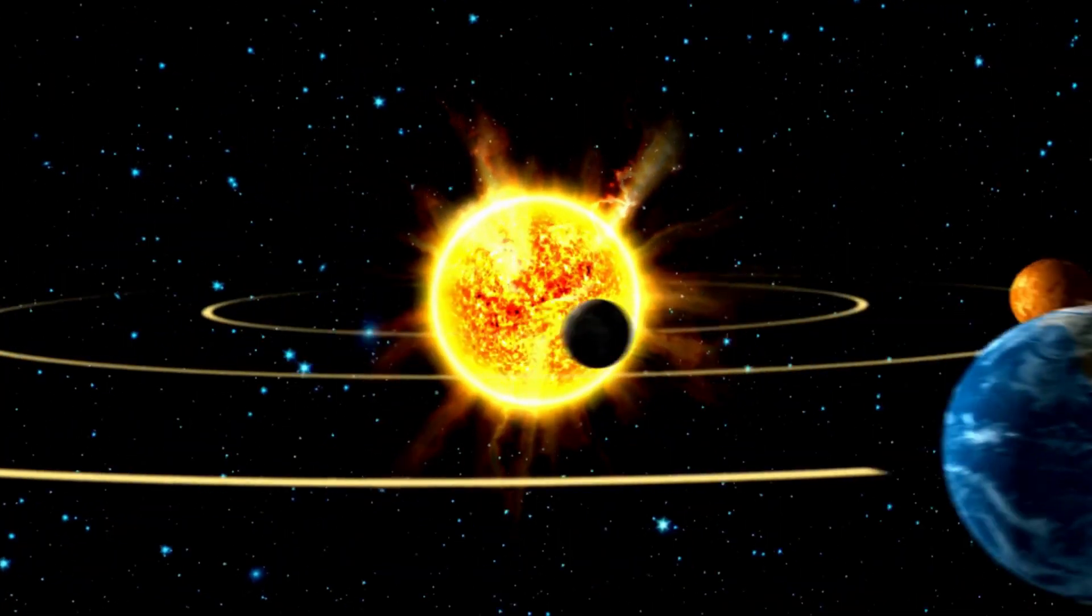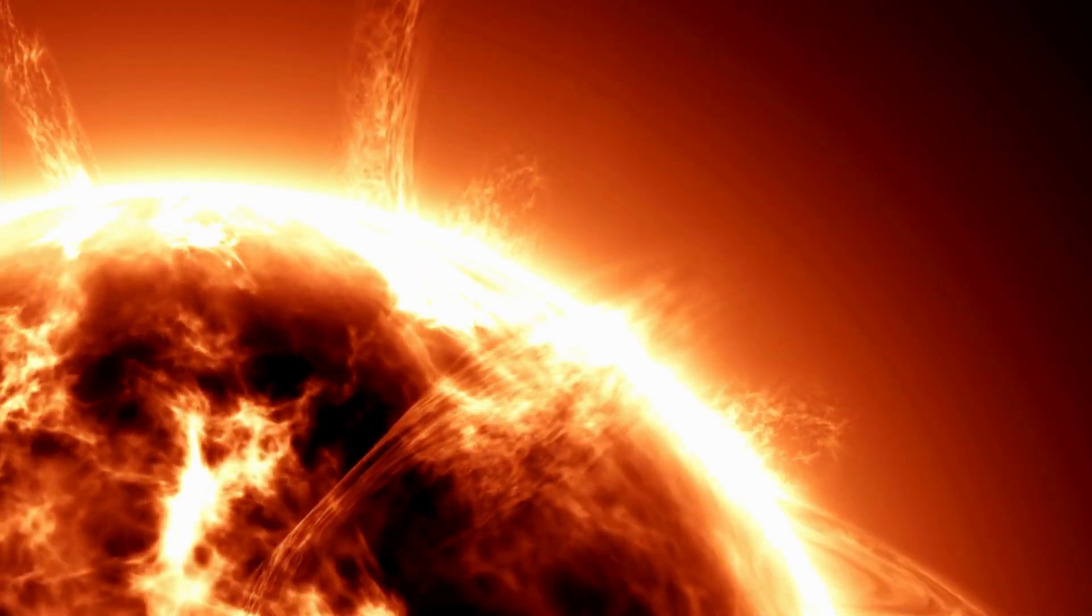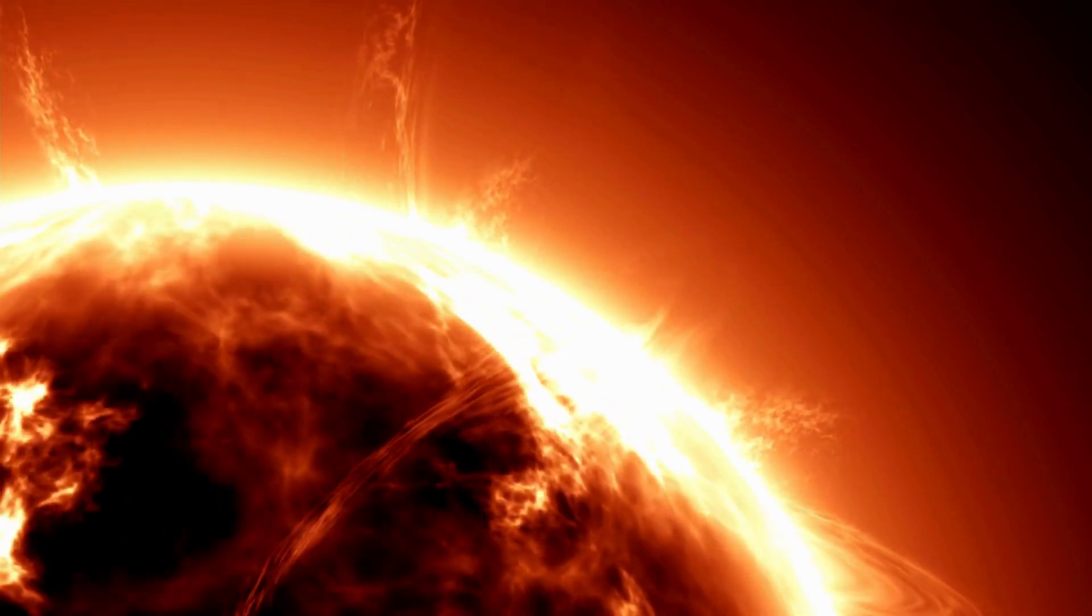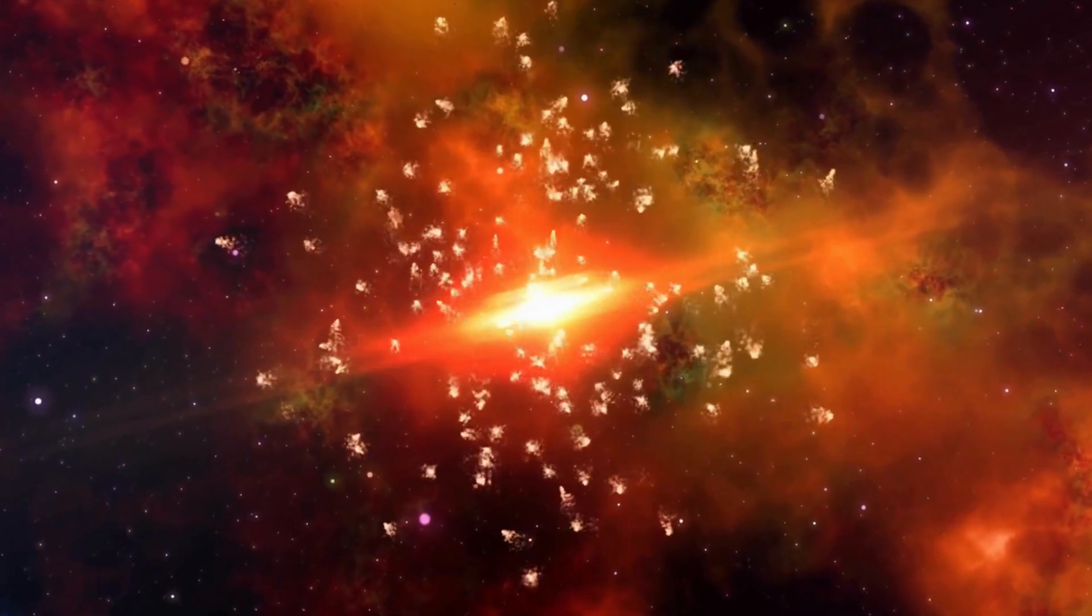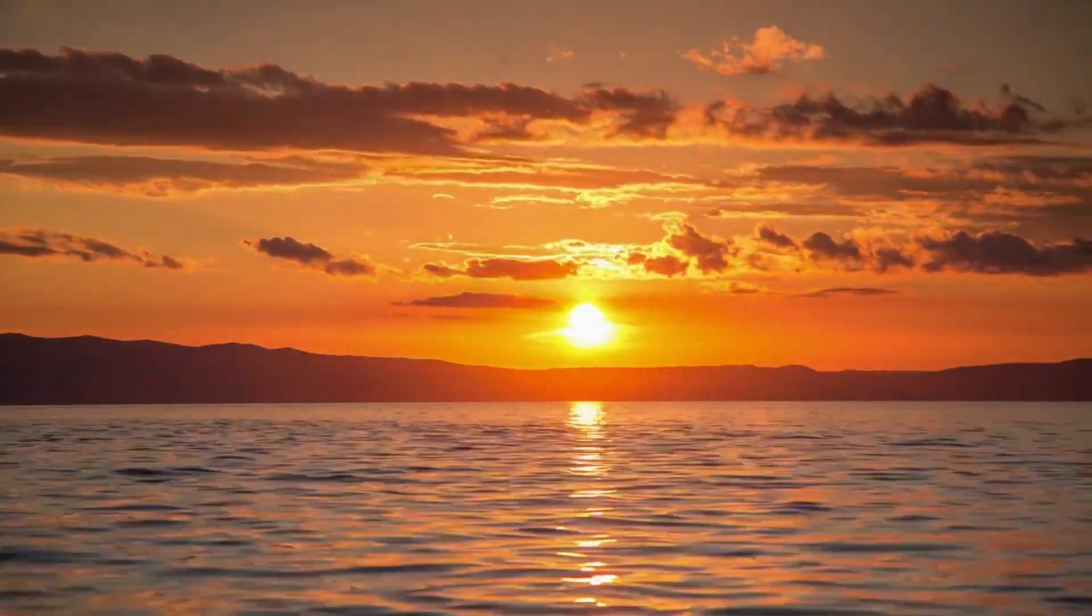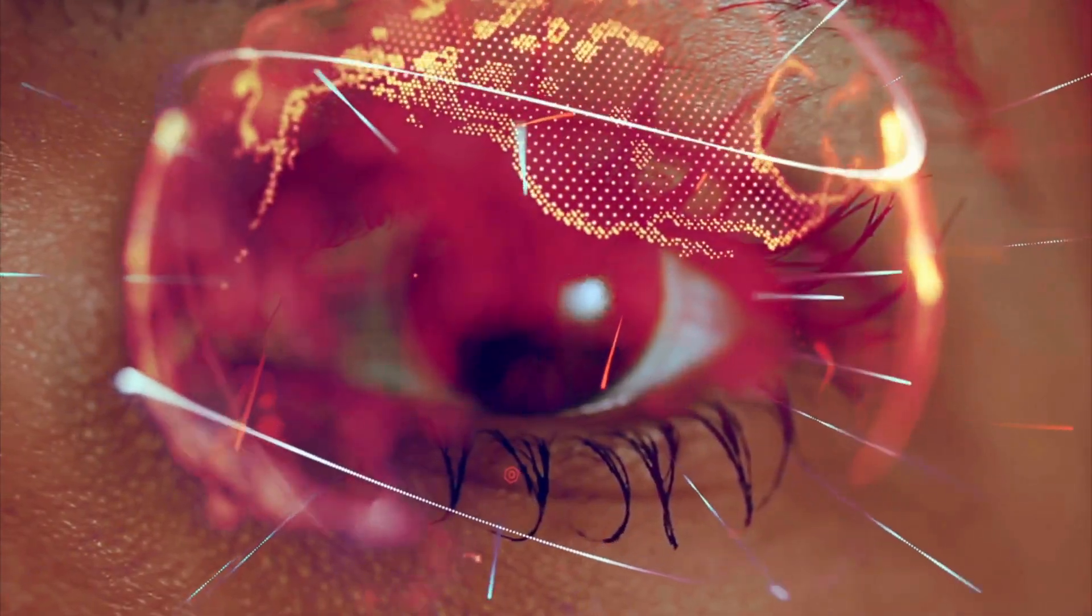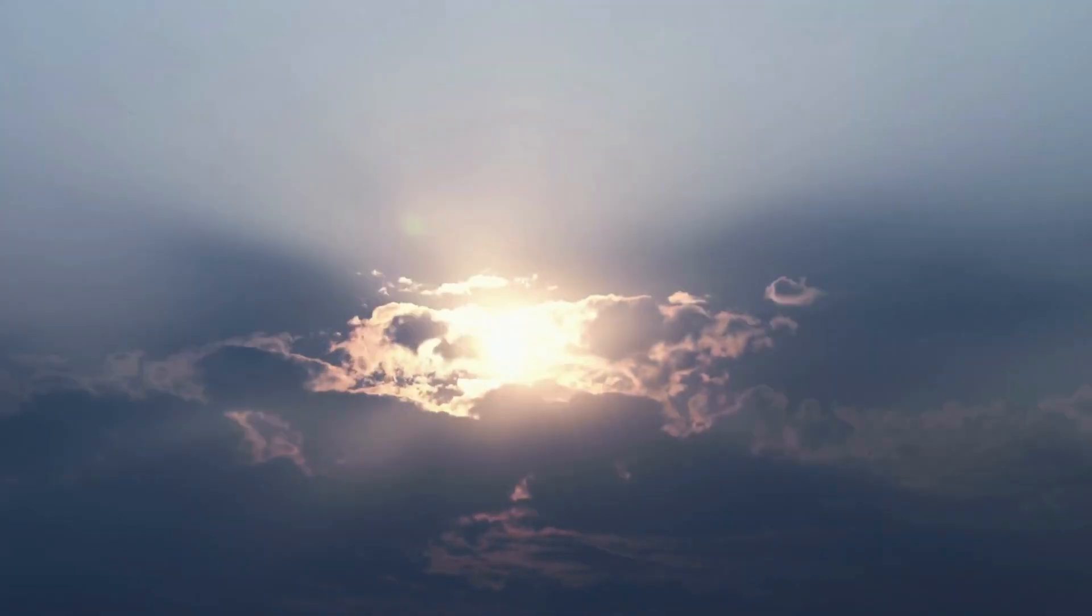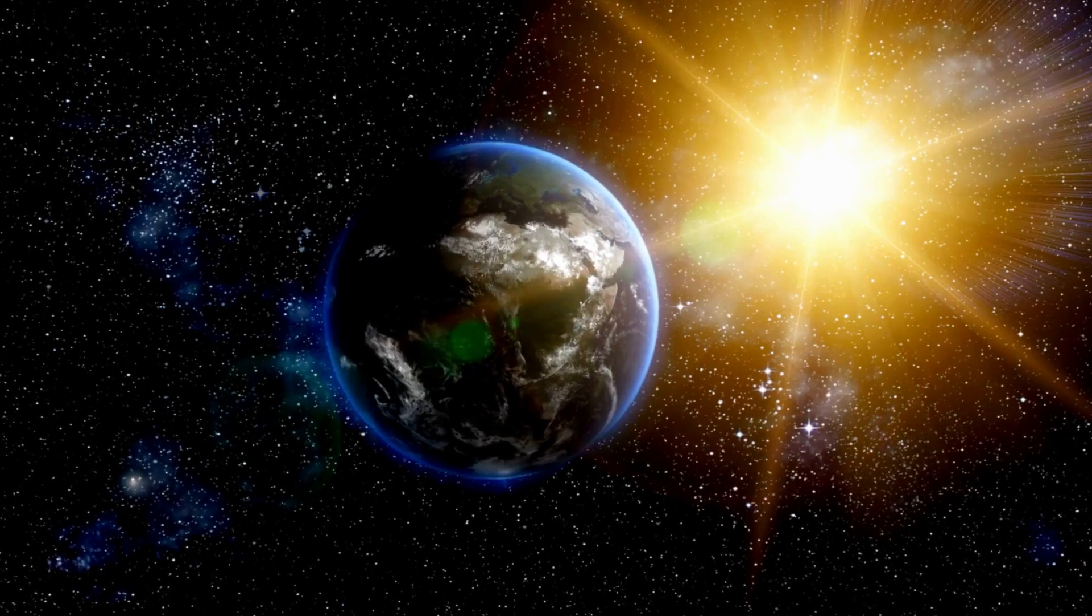This cataclysmic event won't happen for several trillion years. So, while the eventual fate of our sun and solar system may sound like something straight out of a sci-fi thriller, it's not an imminent threat. The universe operates on a timeline that far exceeds human comprehension, and our sun, for all its impending drama, is relatively stable for now.